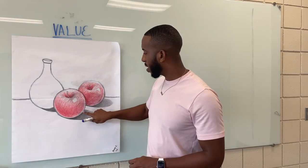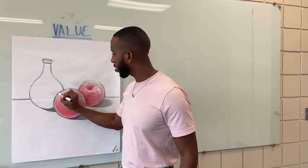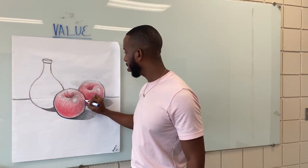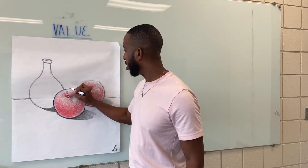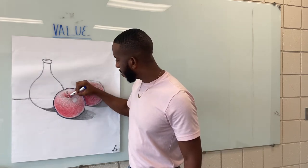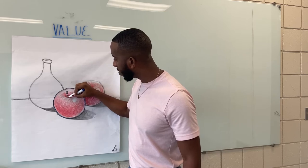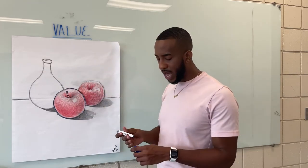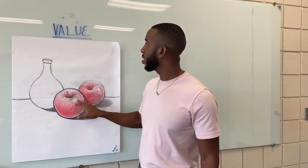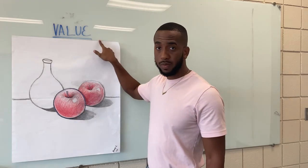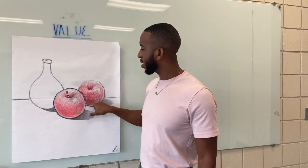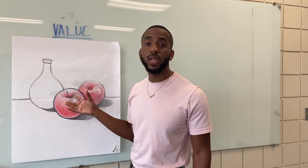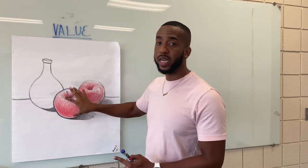We have the initial outline of the apple — I'll take the marker to show that. This is our simple contour line. Maybe we have a simple contour line that goes inside the apple too, but all the rest of what's happening inside this apple is shading or value. I actually have to take the time to shade in the apple to give it a sense of realism and depth, as if you could touch it.